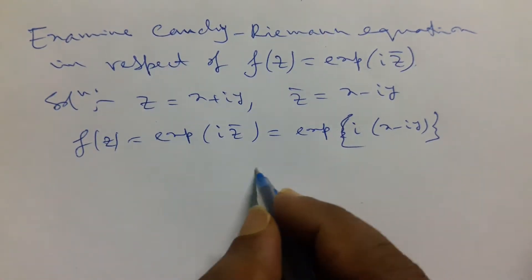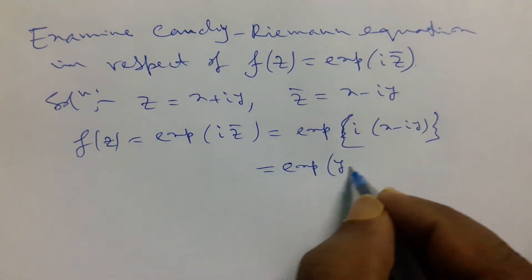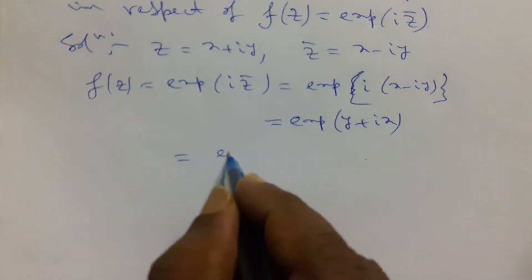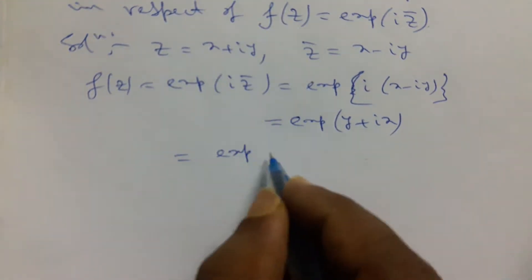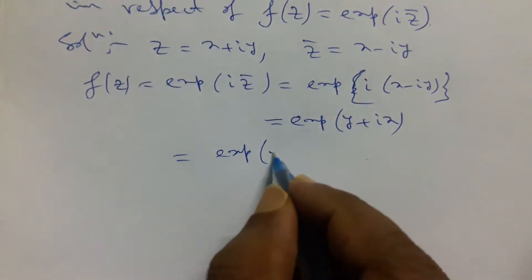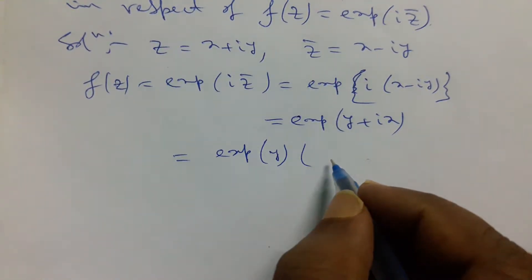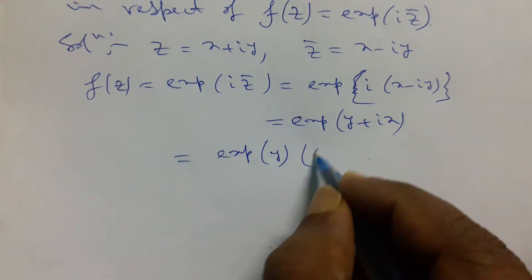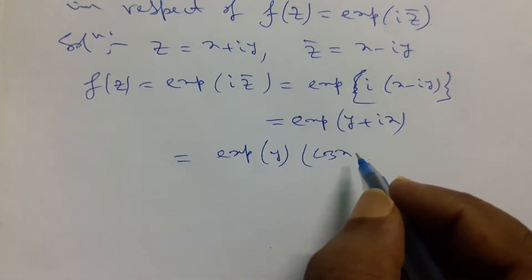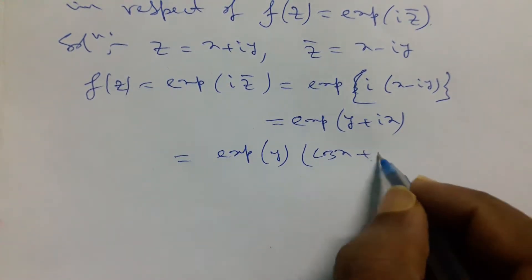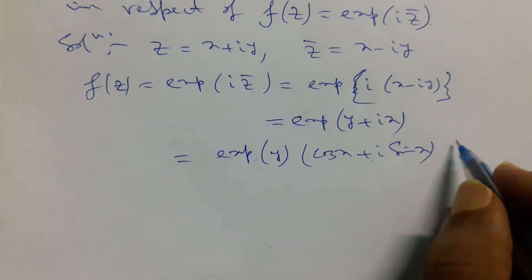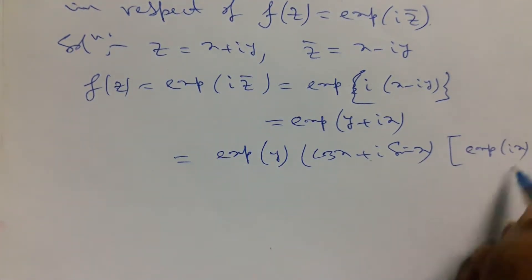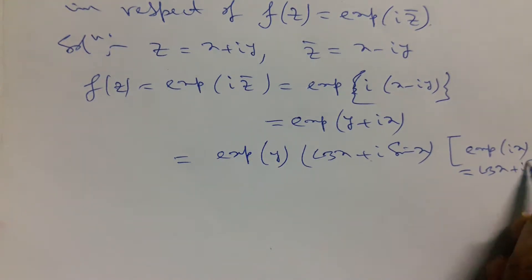This equals e^(y + ix), which equals e^y into (cos x plus i sin x), because we already know that e^(ix) = cos x plus i sin x.